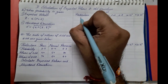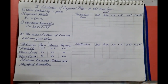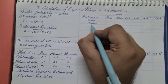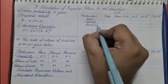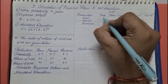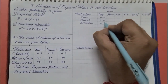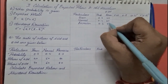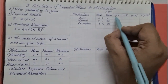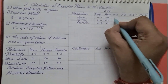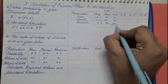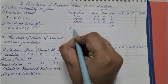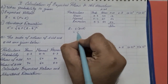Under particulars we have three conditions: boom period, normal period, and recession period. The probability given is 0.3, 0.4, and 0.3. The returns of A Limited are 40, 60, and 80. We multiply probability by return to get p×r values of 12, 24, and 24. The total of p×r is 60. So the expected return r̄ = Σ(p×r) = 60%.